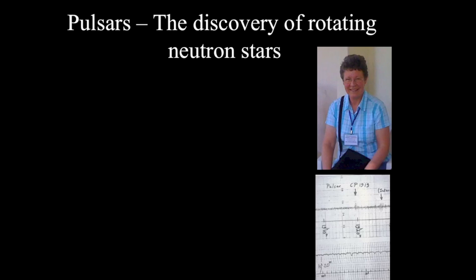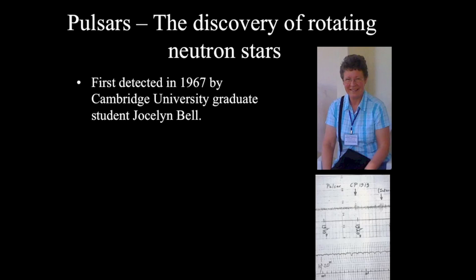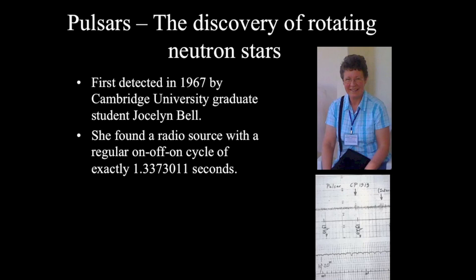Pulsars are rapidly rotating neutron stars that give off radio emission. And these were first observed in the late 1960s by a researcher named Jocelyn Bell. She was using radio telescopes to look at sources of radio light that turned on and off, or at least appeared to turn on and off with very rapid cycles. And so she found one that had a regular period of a little bit more than a second.